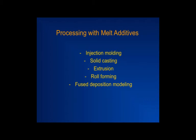That was solid additives. Now let us look at the second case where the additive is melt. We saw different examples — we saw a little bit of detail of injection molding, and some casting is very similar. Extrusion is another one. We'll see an example of roll forming, and finally another variation of selective laser sintering where you use melt processing to create prototypes. We'll take some examples like that.